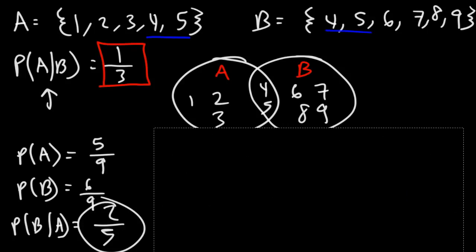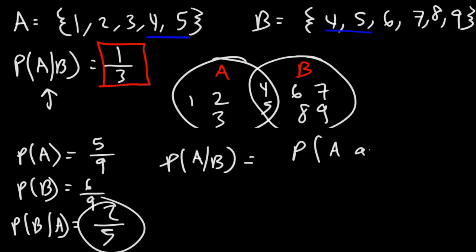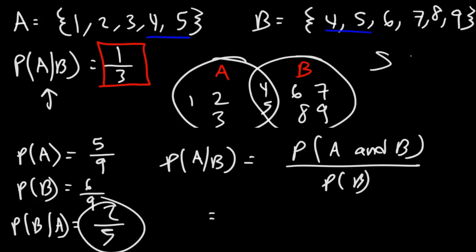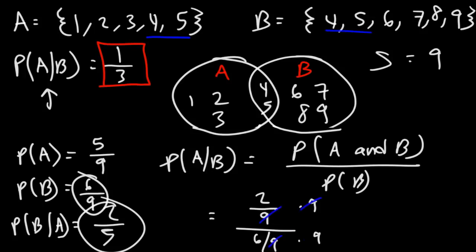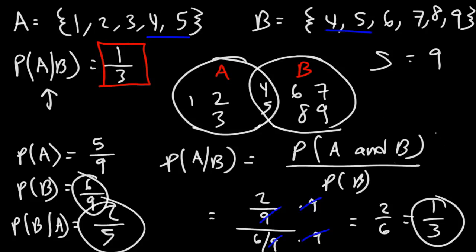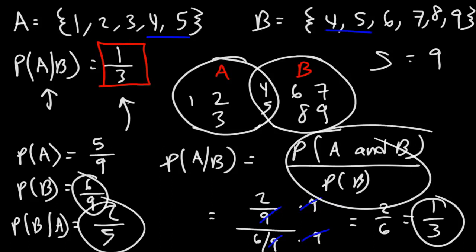Now let's confirm that using conditional probability directly. P(A|B) is the probability that event A and B occurs over the probability that B will occur. The sample space has 9 numbers. The intersection of A and B is 2 numbers — 4 and 5 — so P(A∩B) = 2/9. P(B) = 6/9. Multiplying top and bottom by 9, we get 2 over 6, which reduces to 1 over 3. The same result. Now you see how Bayes' Theorem works with the formula we wrote earlier.